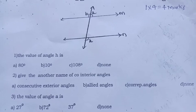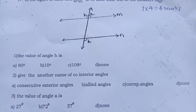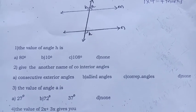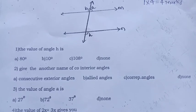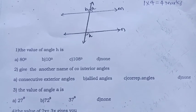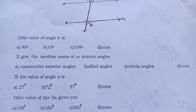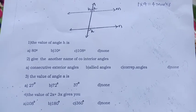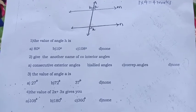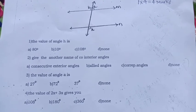Give the another name of co-interior angles: consecutive exterior angles, allied angles, co-rep angles, none. The value of angle A is 27 degree, 72 degree, 37 degree, none. The value of 2x plus 3x gives you 108 degree, 180 degree, 360 degree, none.